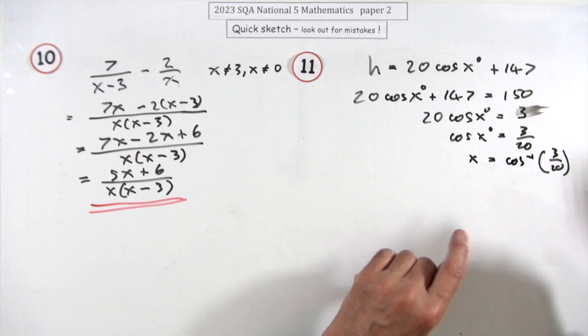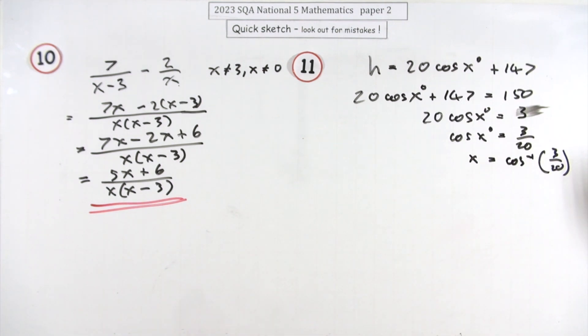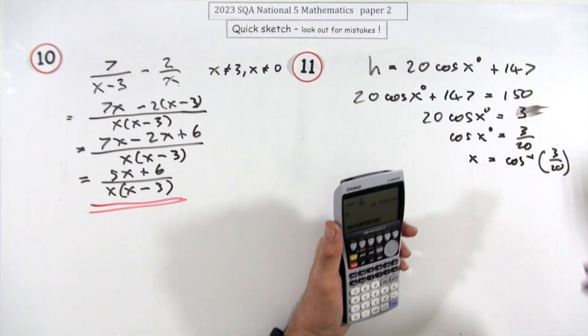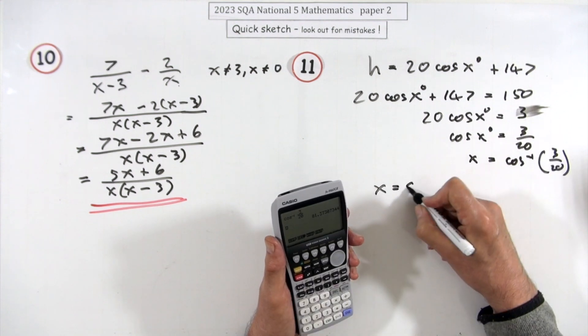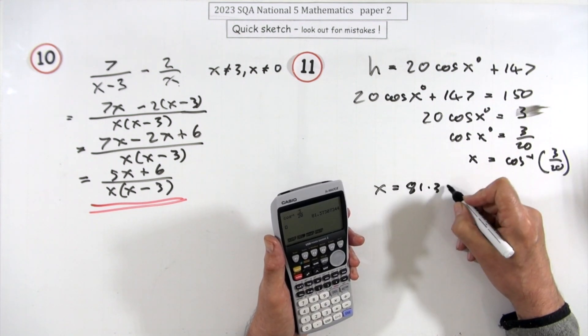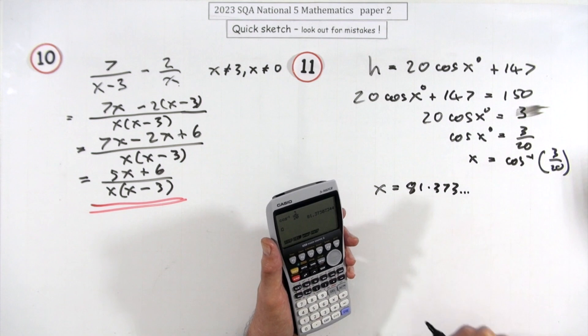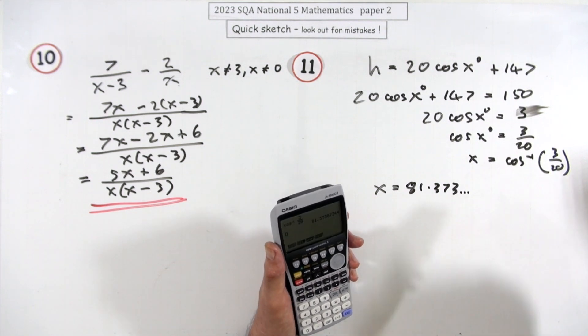You put that into your calculator and then figure out what the other angle is. Typing that in gives an answer of 81, and you know this is positive, so this will be one of the answers. 81.373 and so on, but you could at that point round it off.